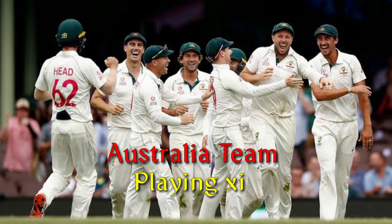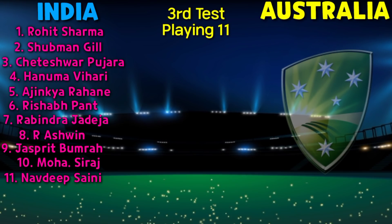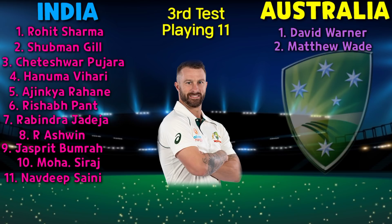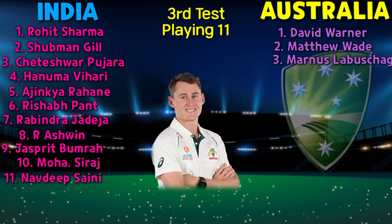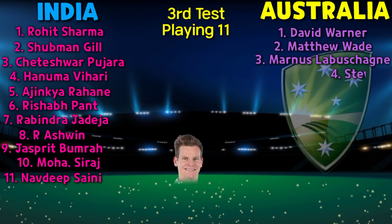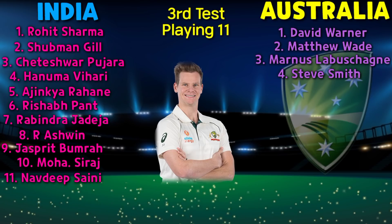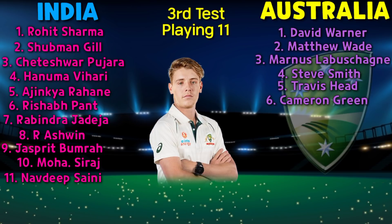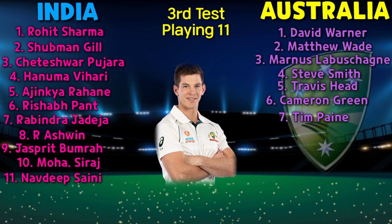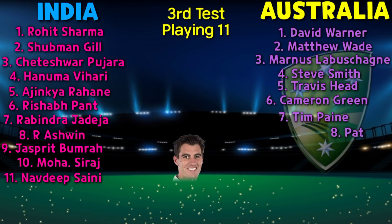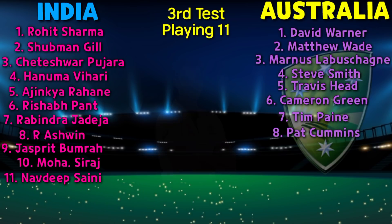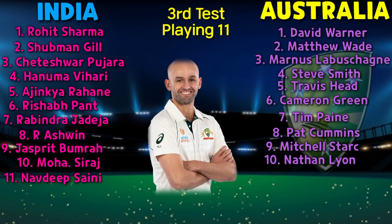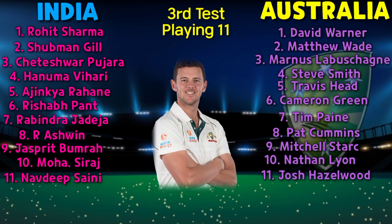Australia Playing 11: No.1 David Warner, No.2 Matthew Wade, No.3 Marnus Labuschagne, No.4 Steve Smith, No.5 Travis Head, No.6 Cameron Green, No.7 Tim Paine, No.8 Pat Cummins, No.9 Mitchell Starc, No.10 Nathan Lyon, No.11 Josh Hazlewood.